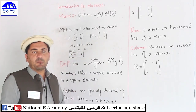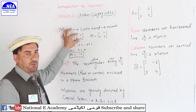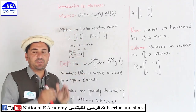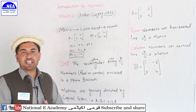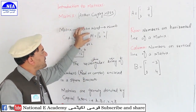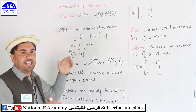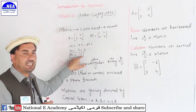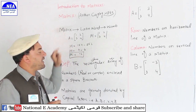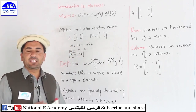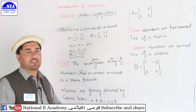So the determinant of A is minus 2. That is what the determinant does: inside the matrix there are many different numbers, but when we apply the determinant operation, a single number is produced. That is why, in Latin, it is called 'matrix.'